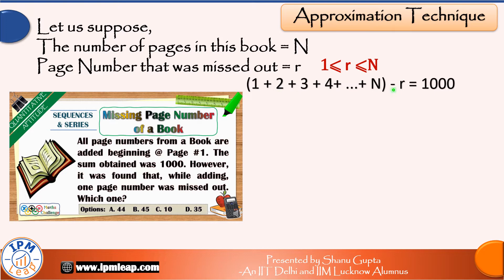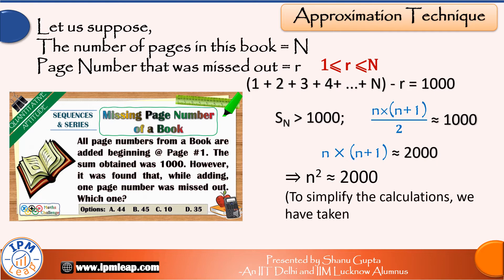Because page number r was missed out while calculating this sum, and r is counted once in numbers from 1 to n, we need to subtract it. That means Sₙ should be slightly greater than 1000, and just like we did in last question, n(n+1)/2 ≈ 1000, which means n(n+1) ≈ 2000, and therefore n² ≈ 2000. To simplify the calculations, we can take n and n+1 as equal.